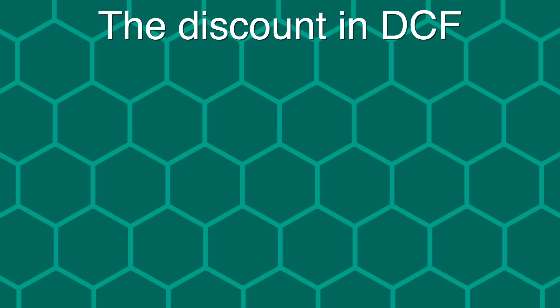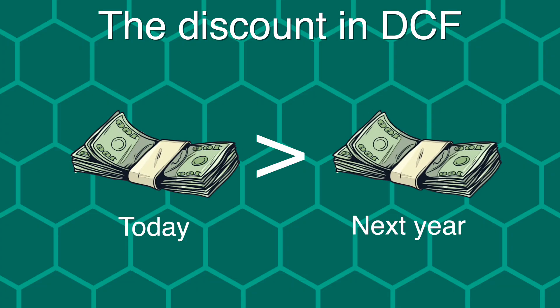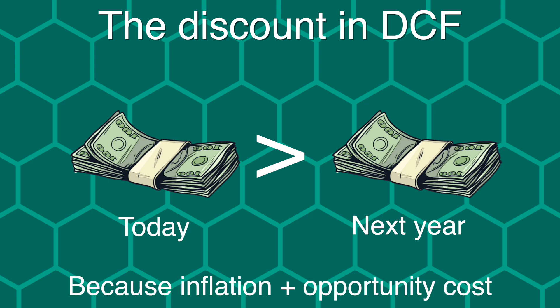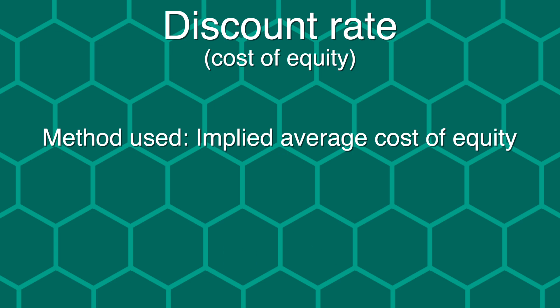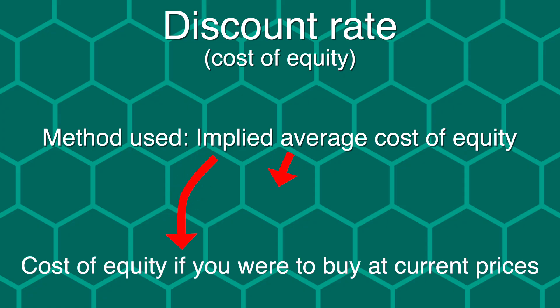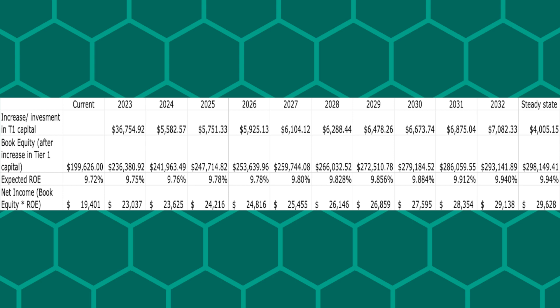After estimating all of these figures, I need to discount these numbers to see how much they're worth today. This is because $1 today is worth more than $1 next year — not just because of inflation, but also because of the ability of that dollar to generate returns if invested. The rate at which I discount future cash flows is known as the cost of equity. I have used the average implied cost of equity for US banks as of now, which is 9.94% — meaning this is the cost of equity investors are paying if they buy the average US bank at its current price. I have decided to use the same 9.94% for return on equity at the end of 10 years and in perpetuity, because when return on equity equals cost of equity, the bank generates just enough income to cover its cost of equity with no excess returns.